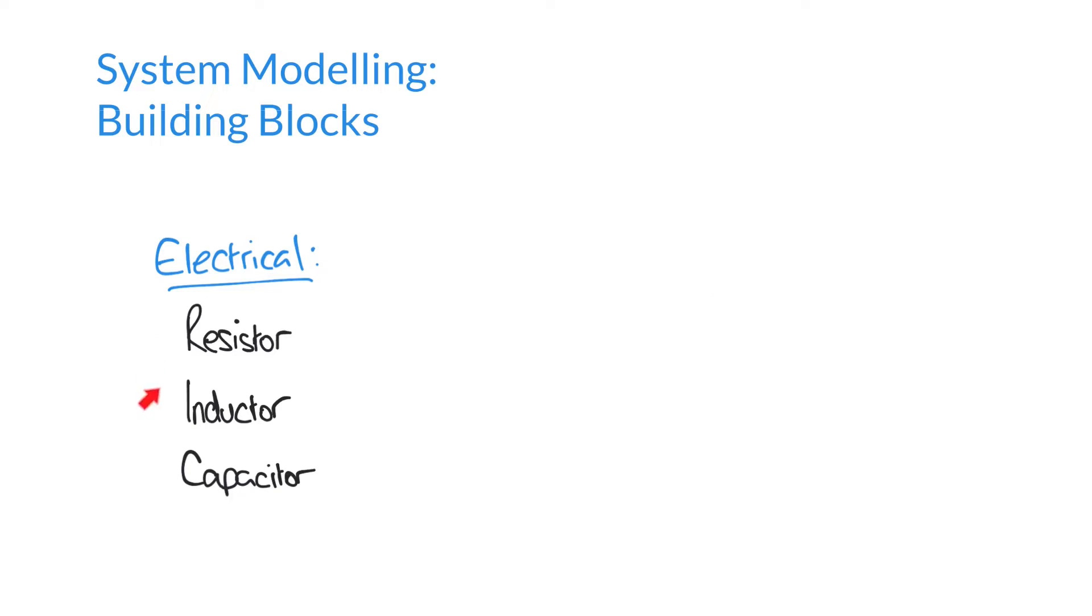Let's start with these electrical components first though. What we're going to do is define an expression for the voltage across each of these components. And I'm going to call these Vr for the voltage across the resistor, Vl across the inductor, and Vc for the capacitor.